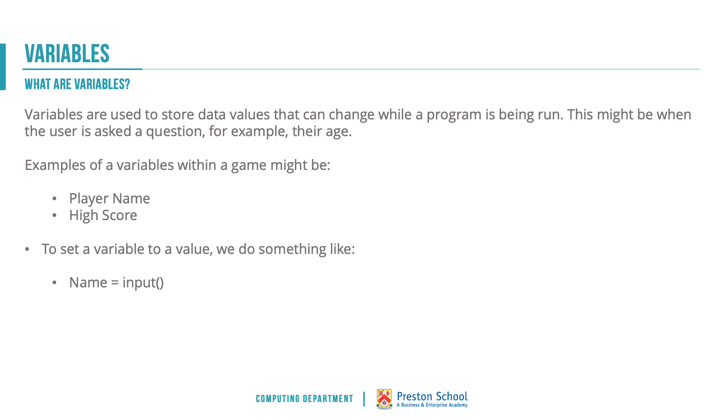This might be things like the player name that we set at the start of the program, or things like the score that might change during the program a number of times. Or a high score, a record value from all of the games ever played.